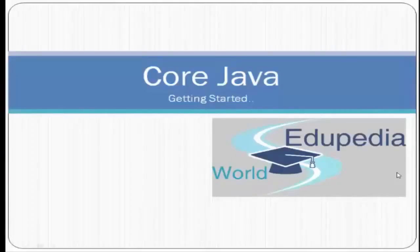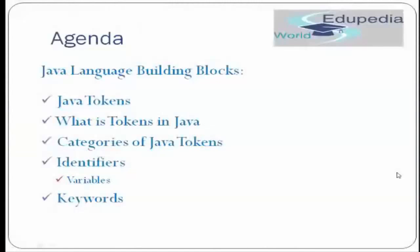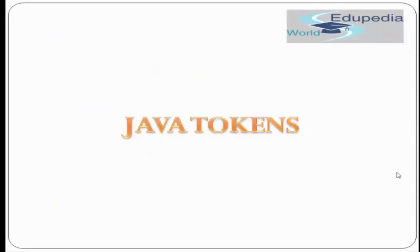Good morning friends, welcome to the Edupedia World. The agenda for this tutorial is to learn about Java language building blocks. We'll learn about Java tokens, study what tokens are in Java, cover the categories of Java tokens, and look at two important categories: identifiers and keywords. Within identifiers, we'll also be covering variables.